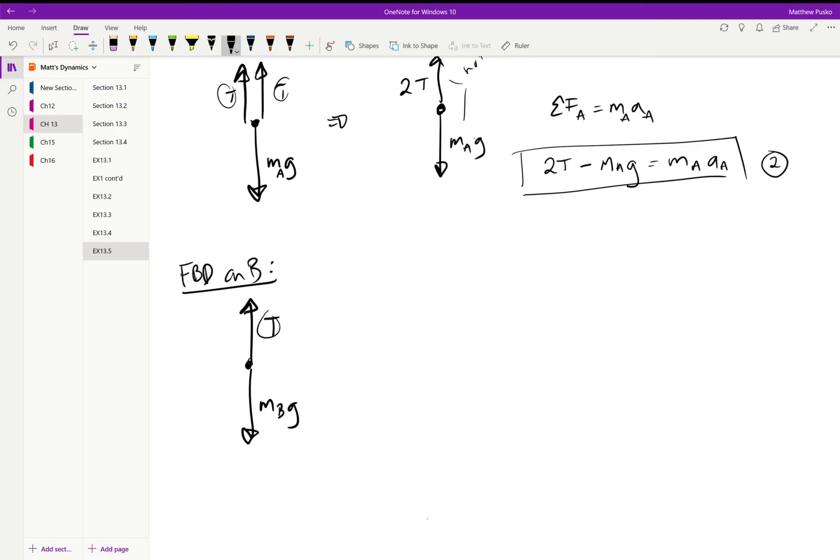It's the same T everywhere, all these are the same. We can sum the forces now. The summation of the forces on B is equal to mass B times the acceleration of B. We have a T pointed up and m_B g pointed down, and that's going to equal m_B times the acceleration of B. That is our third equation and it is an equation of motion.